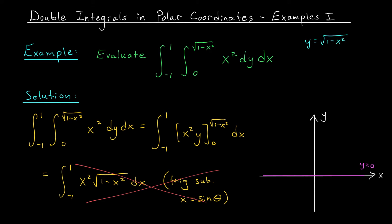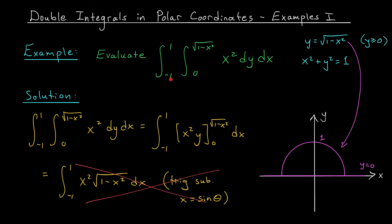If we square both sides of that equation and move some terms around, we get x squared plus y squared equals 1, which is the equation of a circle centered at the origin with radius 1 — the unit circle. But hold on: y equals the square root of 1 minus x squared means y has to be positive, so this isn't the whole circle, it's just the top half. And x is going between minus 1 and 1 — those are exactly the two points where the circle touches the x-axis. So we're actually integrating over the entire semicircle in the upper half plane.